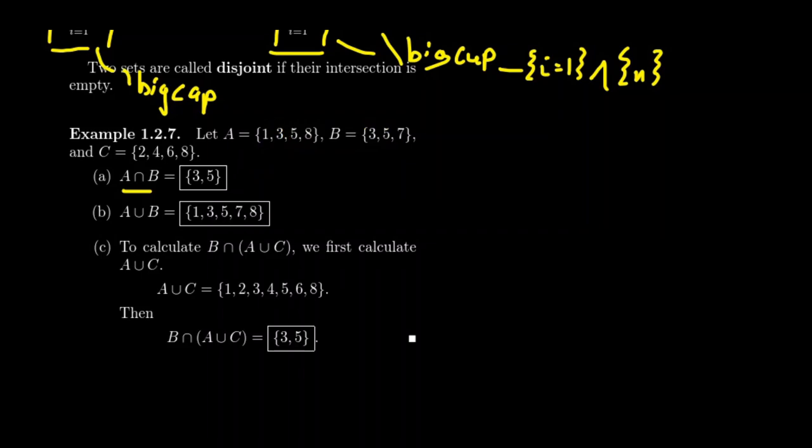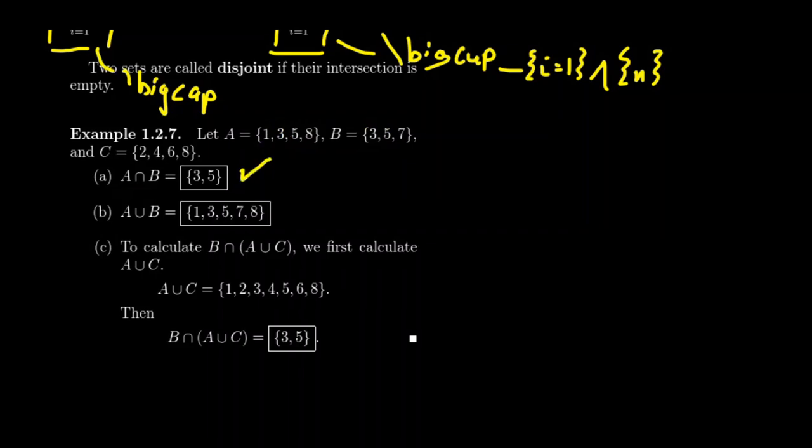If we want to do the union of A and B, we're going to take everything that's in A: 1, 3, 5, and 8. We're going to take everything in B: 3, 5, and 7. And remember, repetition doesn't matter when it comes to a set. So the fact that 3 and 5 got listed twice, you can remove it from the list.